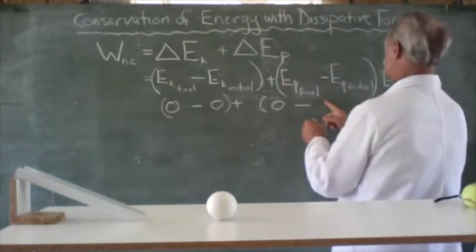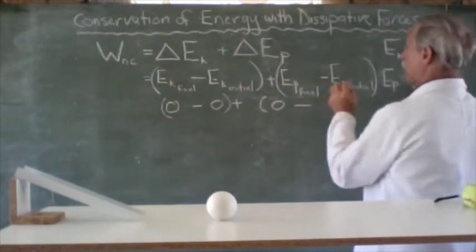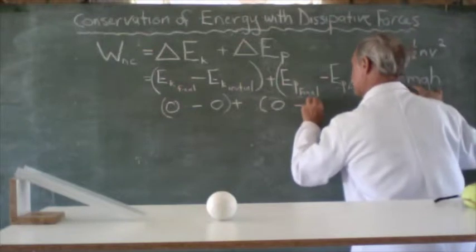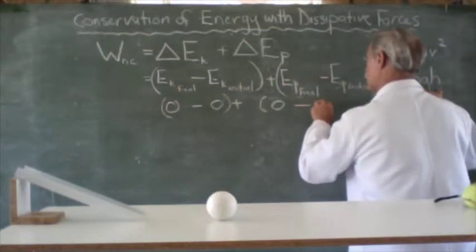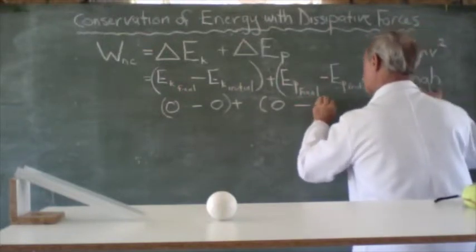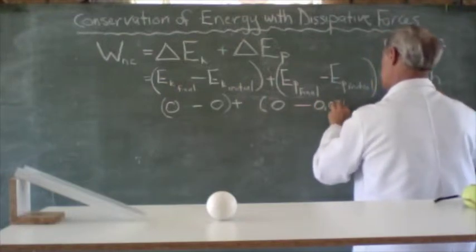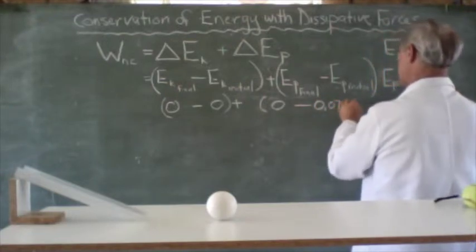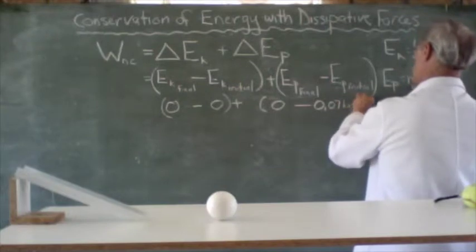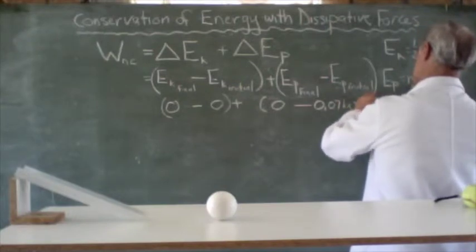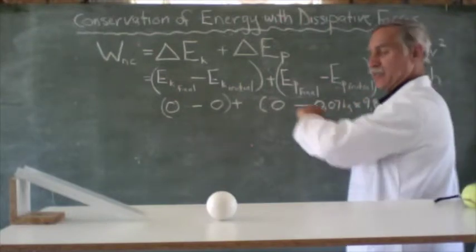we work in kilograms. So we're going to divide that 70 by 1,000. So let's apply our formula. Mass is 70 grams converted to kilograms divided by 1,000 is 0.07 kilograms. That's the mass, times G,